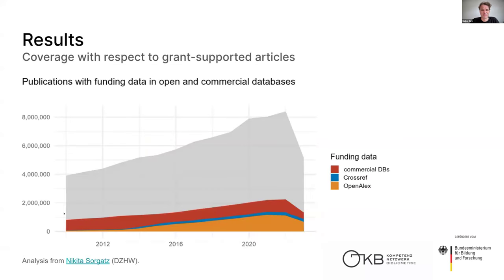However, we also found some issues. Some fields are not covered as comprehensively as others. With respect to grant-supported articles, the proprietary databases — Scopus and Web of Science — have better coverage, particularly when it comes to grant-supported articles from German funders such as the Deutsche Forschungsgemeinschaft, DFG, or the federal government. This is something we want to address during our curation efforts by integrating and adding funding information to the OpenALeX snapshot.